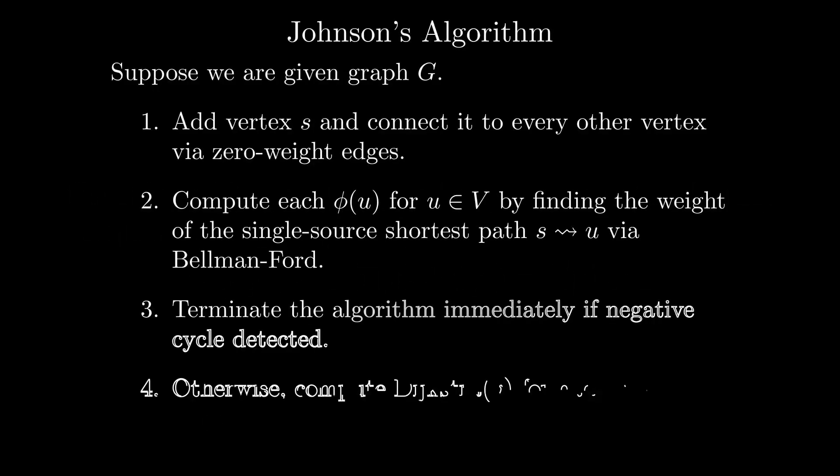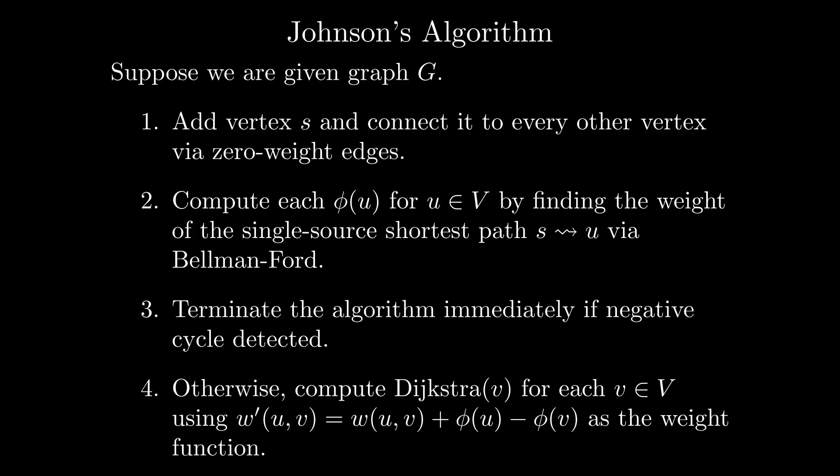Altogether, we therefore have the following routine, known as Johnson's algorithm. For a given graph G, add a vertex s and connect it to every other vertex via zero weight edges. Compute phi u by finding the weight of the single source shortest path s to u via Bellman-Ford. If we encounter any negative cycles, terminate the algorithm immediately and report the existence of a negative cycle. Otherwise, compute the single source shortest paths for every vertex in the graph using the modified weight function w prime u v equals w u v plus phi u minus phi v. For the w prime values computed for each path, add phi v minus phi u to recover the actual lowest weight values. This algorithm is trivially correct since we proved that our potential function phi guaranteed positive weights and did not alter the actual shortest paths themselves, and we already proved the correctness of Dijkstra's and Bellman-Ford's algorithms.